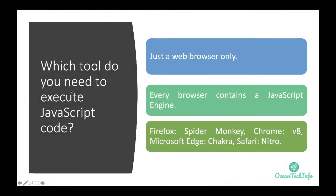Which tools do you need to execute JavaScript code? Just a web browser, a notepad or any editor where you can write your JavaScript code, and a browser to execute it — nothing else. This is because every browser contains a JavaScript engine. For example, Firefox has the SpiderMonkey engine, Chrome has the V8 engine, Microsoft Edge has the Chakra engine, and Safari has the Nitro engine.